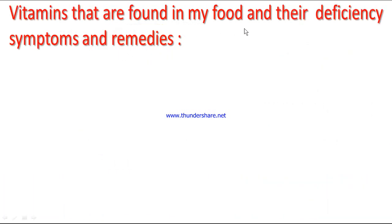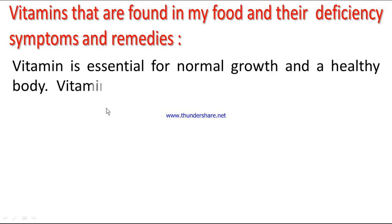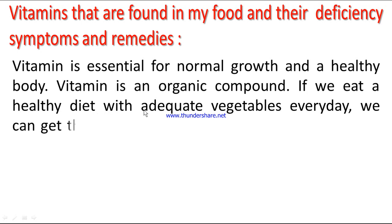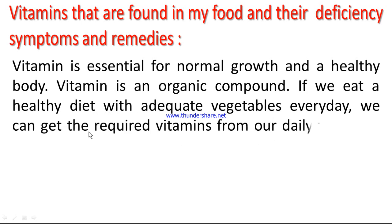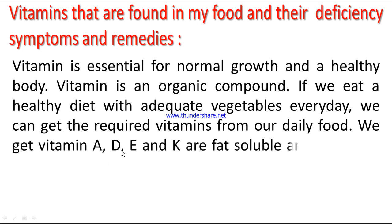Vitamins found in my food, their deficiency symptoms, and remedies. Vitamin is essential for normal growth and a healthy body. Vitamin is an organic compound. If we eat a healthy diet with adequate vegetables every day, we can get the required vitamins from our daily food. Vitamins A, D, E, and K are fat soluble, and vitamin B complex and C are water soluble.